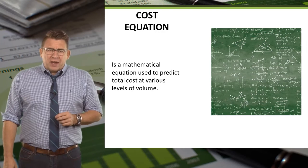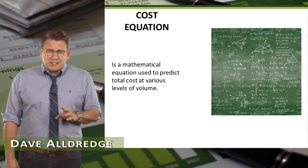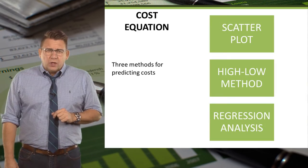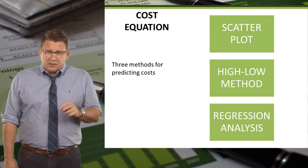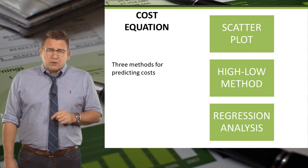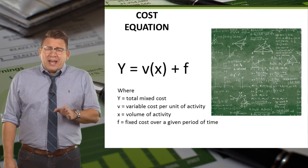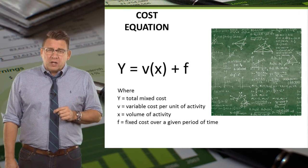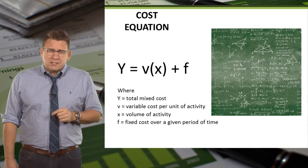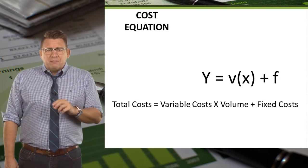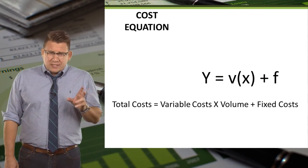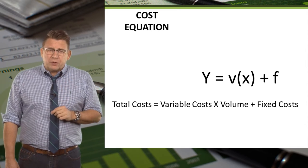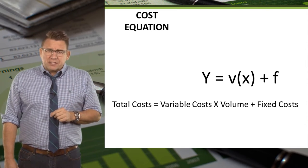The cost equation is a mathematical formula used to predict costs at various levels of volume. We will learn three methods to predict costs at various levels of volume, and each uses the cost equation. The cost equation is y equals vx plus f, where y is the total mixed cost, v is the variable cost per unit, x is the volume, and f is the total fixed costs. Another way to think of the cost equation is: total cost equals variable cost per unit times volume, plus fixed costs.